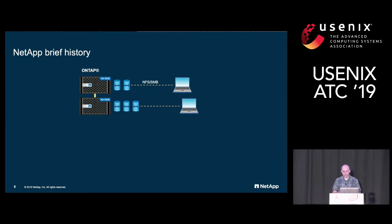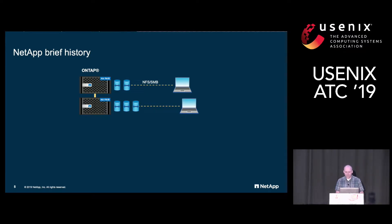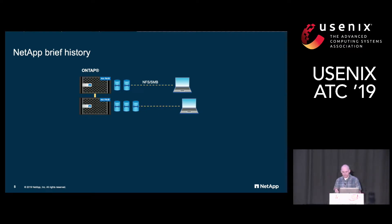To address that, NetApp introduced redundant filers, or an HA pair, where each node is responsible for a bunch of volumes but its partner can take over in case of failure. Using this, we can achieve really high reliability like six nines due to redundant hardware analytics and other things.